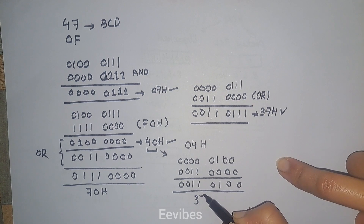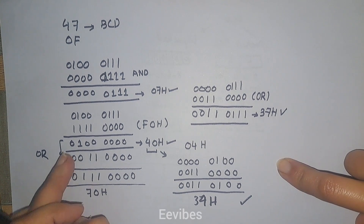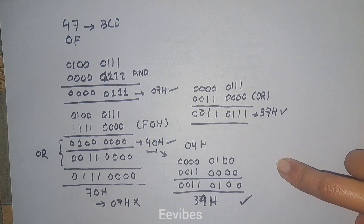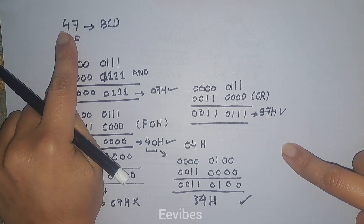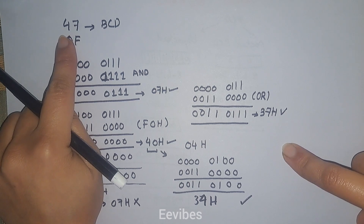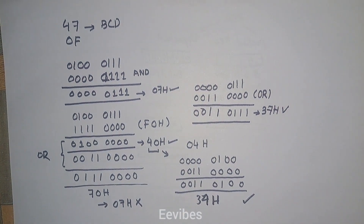After swapping 40 hex to 04 hex and then OR-ing with 30 hex, the answer is 34 hex, which is the ASCII equivalent of 4. And if you perform the OR operation first and then swap, you get 07 hex, which is not correct. So for the upper nibble you always need to perform the swapping first. Swapping switches the position of the lower nibble with the higher nibble. This is how we perform the packed BCD to ASCII conversion.